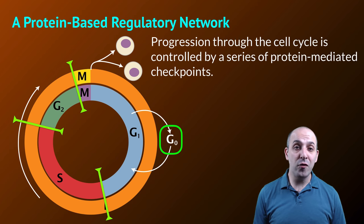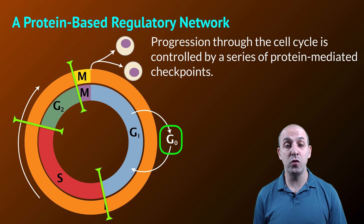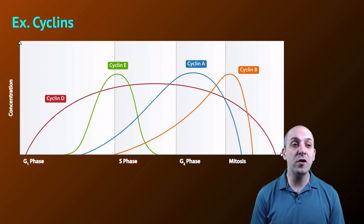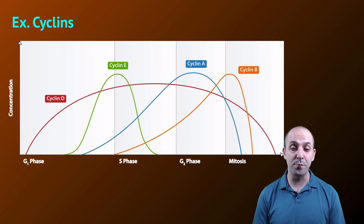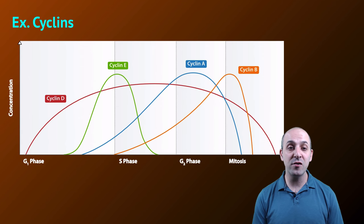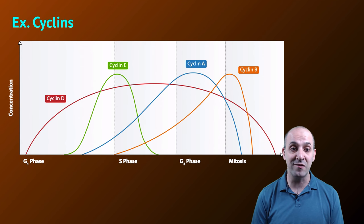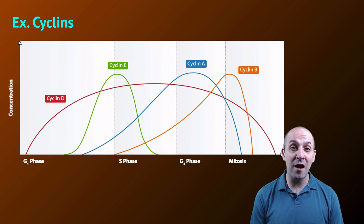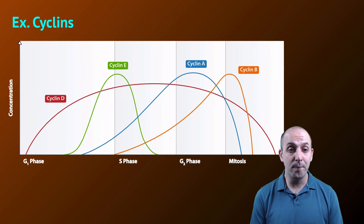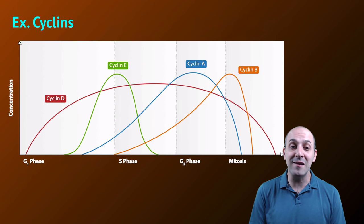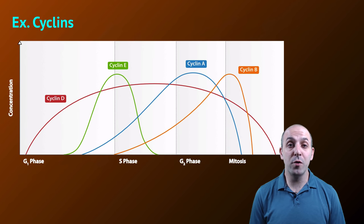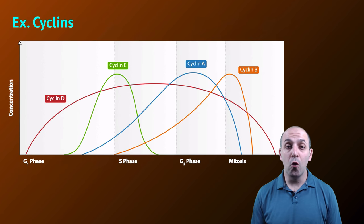In order to understand how these checkpoints work and how the proteins that are involved in them interact to allow the cell to move through the cell cycle, let's look at the group of proteins that are referred to as the cyclins. Here we see a graph of four different cyclin proteins, cyclins A, B, D, and E, and their concentrations in the cell at different points in the cell cycle. You can see that each cyclin has a different concentration profile at different points in the cycle. A large concentration of cyclin E, for instance, is necessary for a cell to move from G1 into S phase. Cyclin D seems to have a more broad profile. The interactions of these different cyclin protein molecules are connected to the progression of the cell through the cell cycle. That's what we mean when we say that the cell cycle is a protein-based regulatory network.